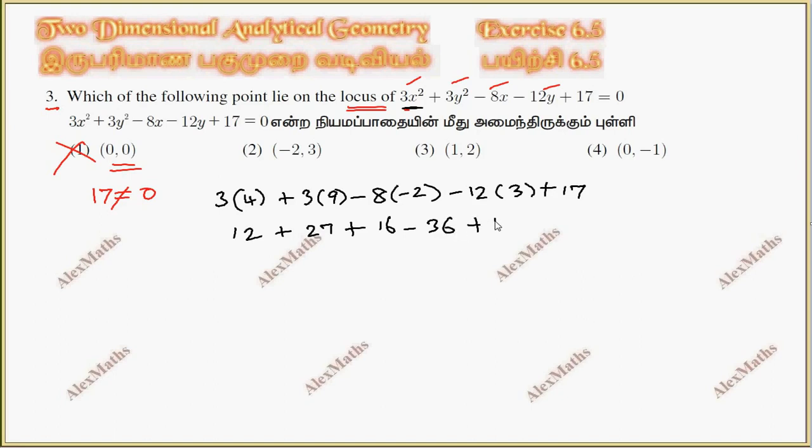Calculating: 12 + 27 + 16 - 36 + 17 does not equal 0, so we eliminate this option.